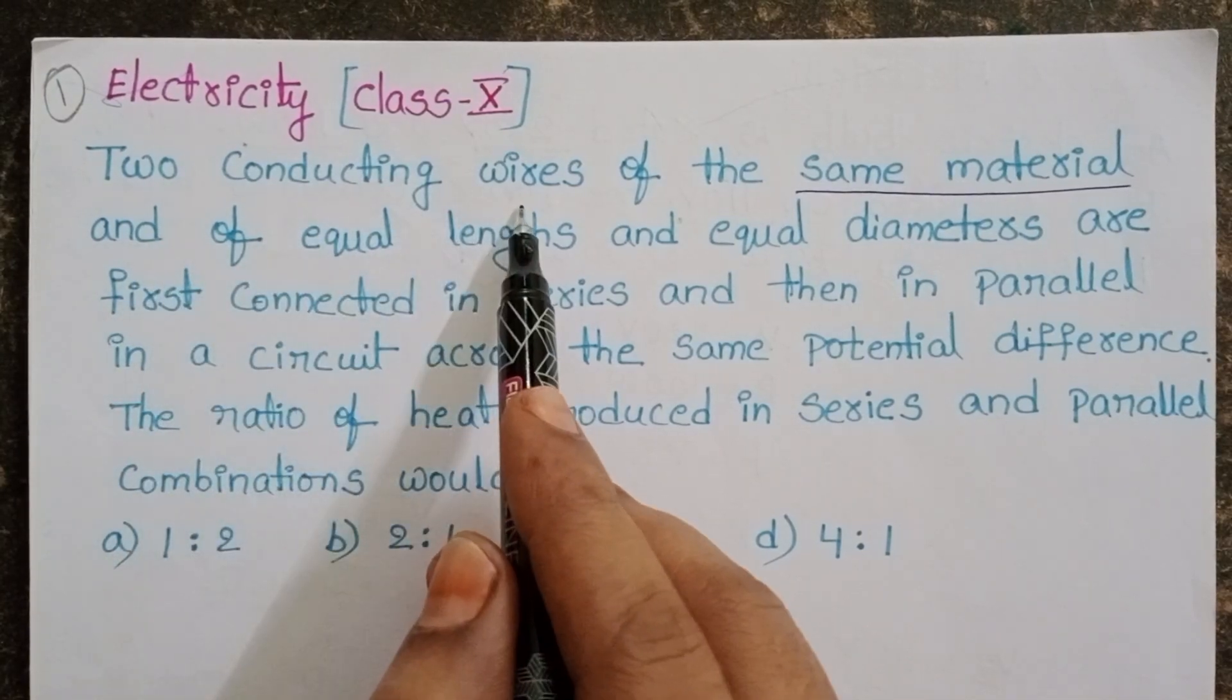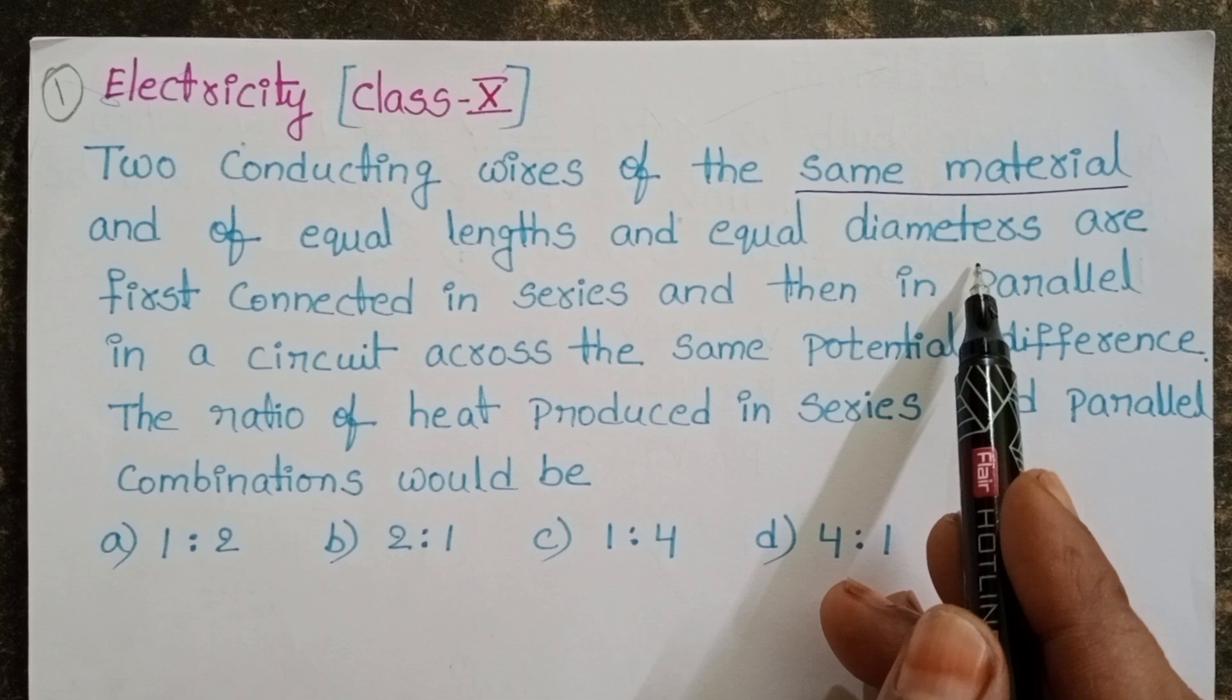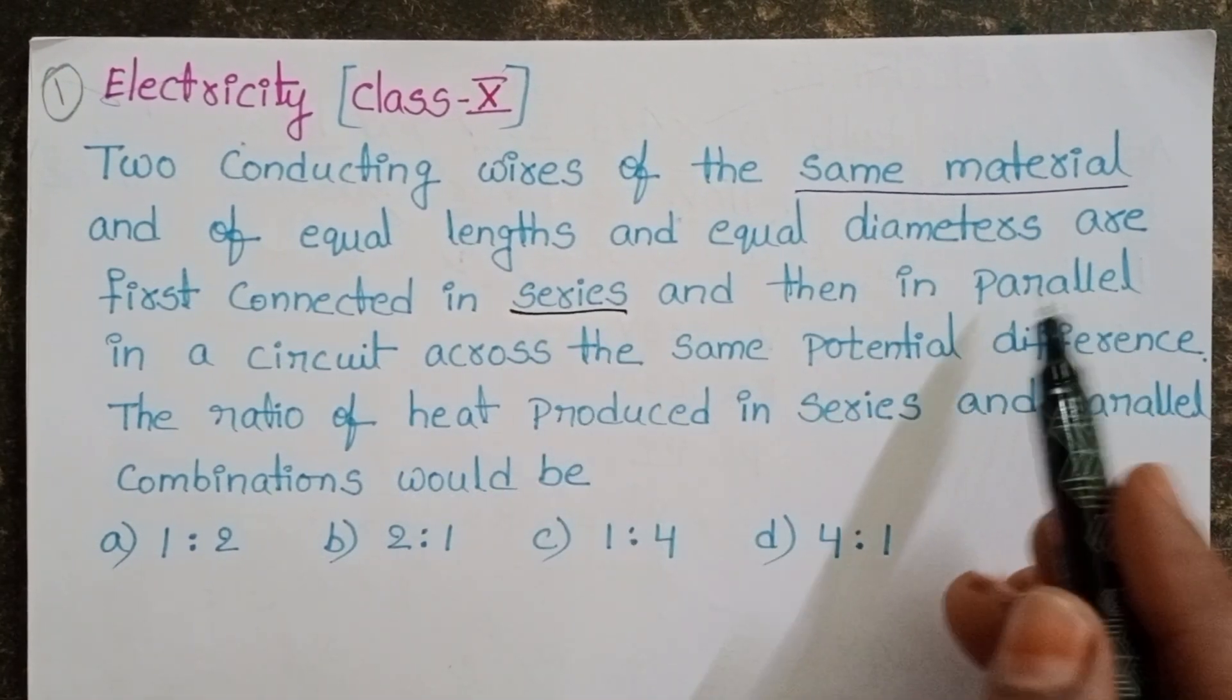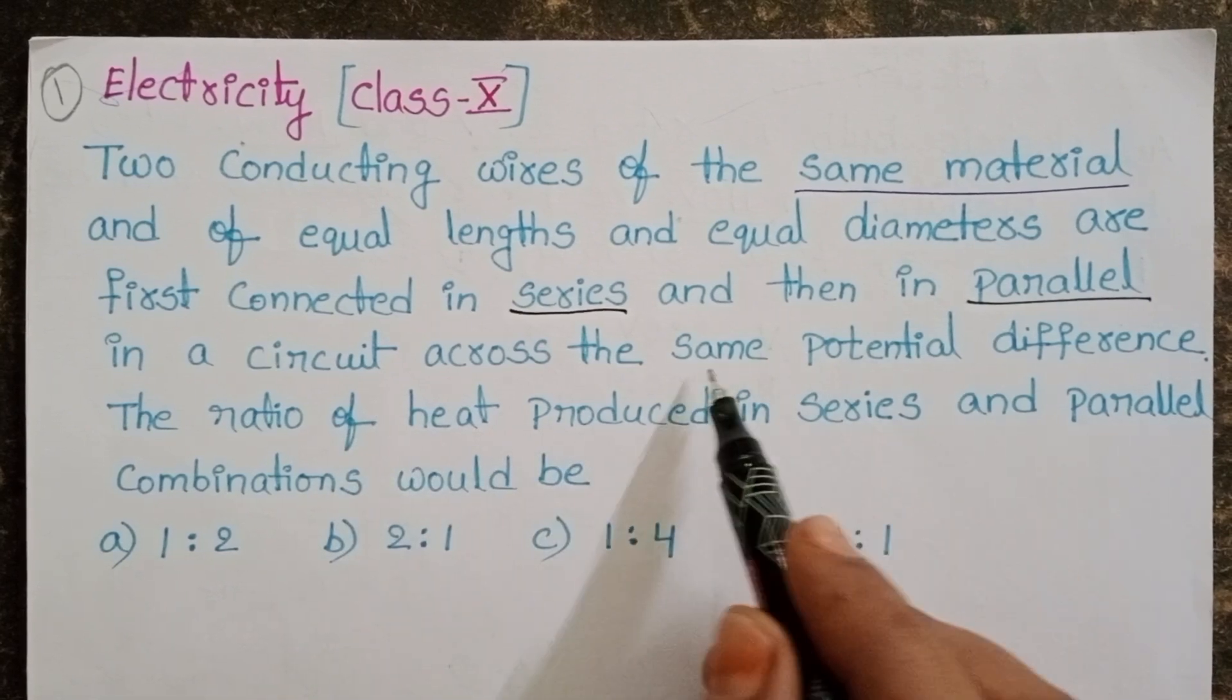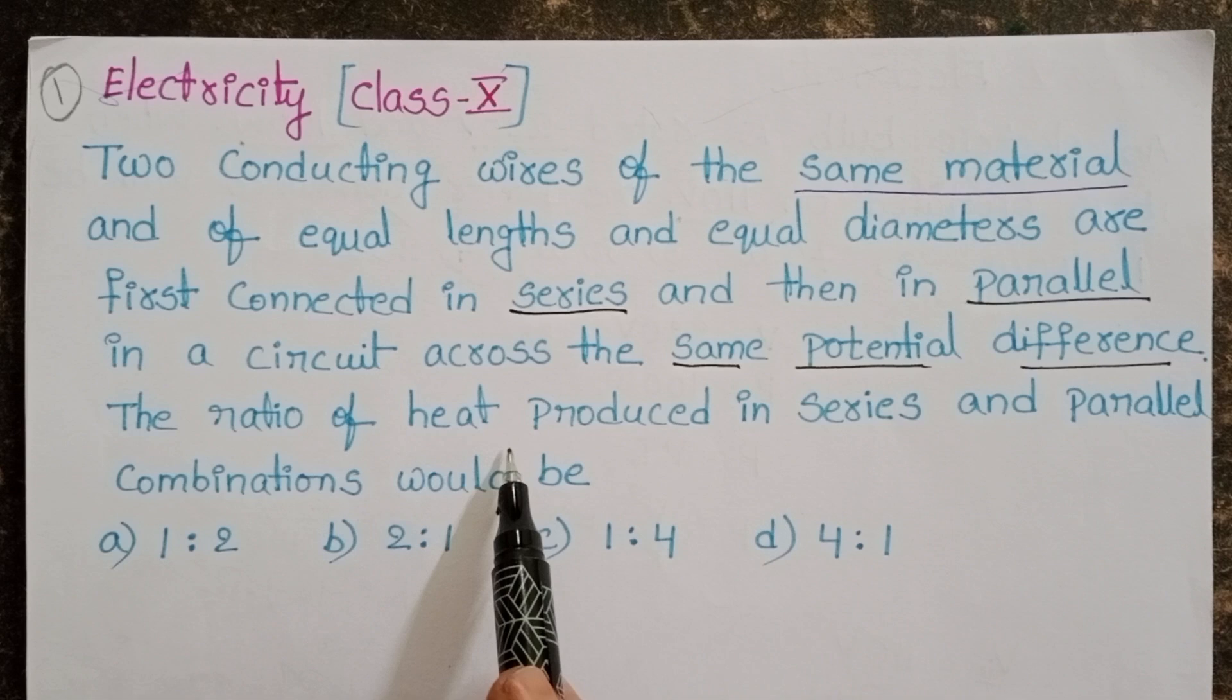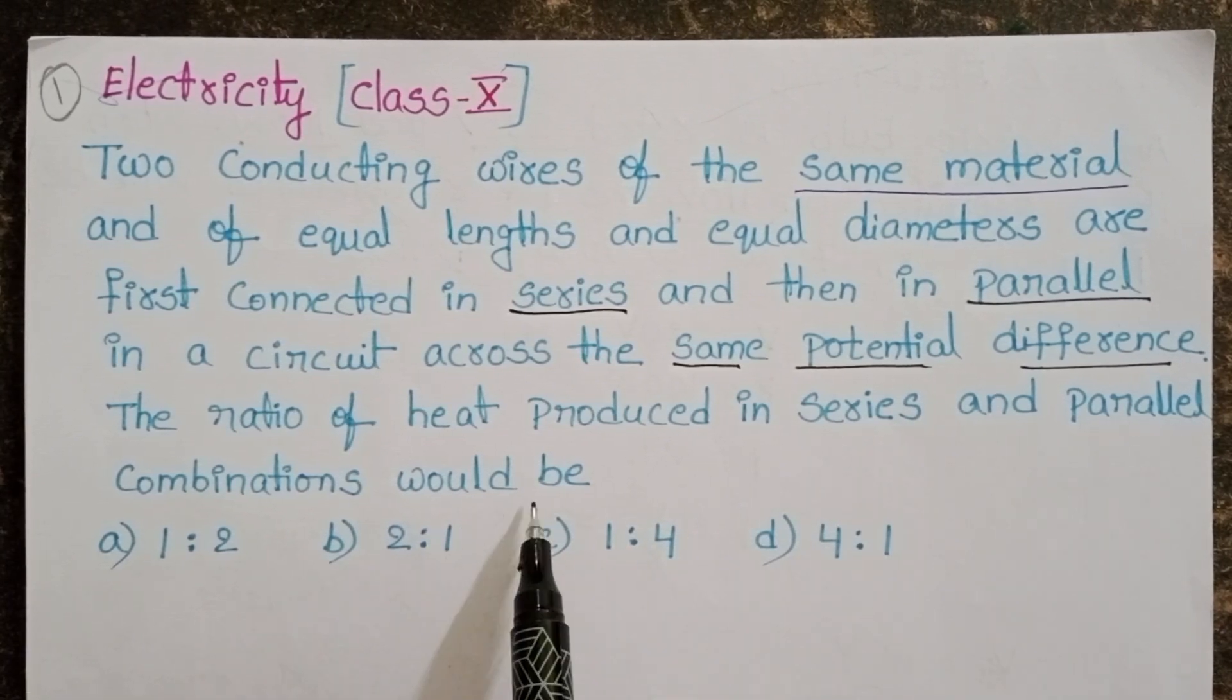Two conducting wires of the same material and equal lengths, equal diameters are first connected in series and then in parallel in a circuit across the same potential difference. The ratio of heat produced in series and parallel combinations would be?